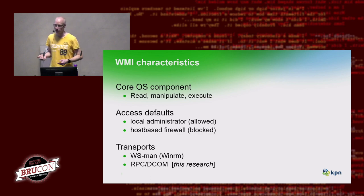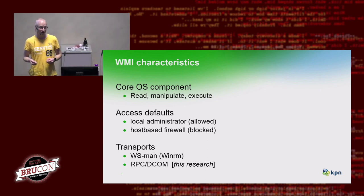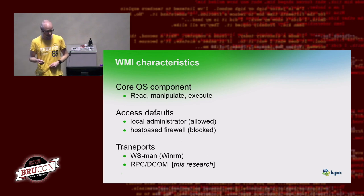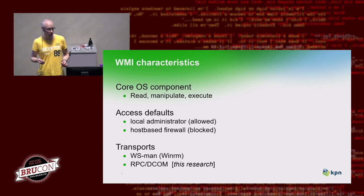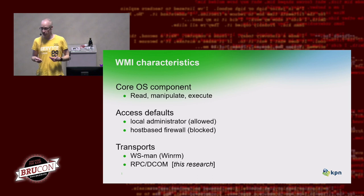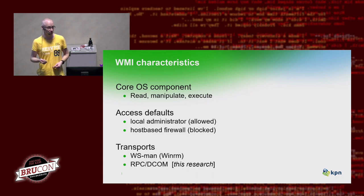Microsoft, as an early adopter, implemented its own instance, and it was called Windows Management Instrumentation. Soon it became available to Windows, and because it can be considered a core OS component, it has been available since Windows 2000. With WMI you can read, write, or execute remote commands. By default, when you are a member of the local administrator group, you are allowed to have remote access, though by default it is blocked by the host-based firewall in recent versions.